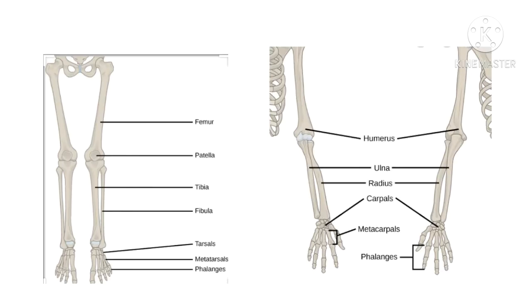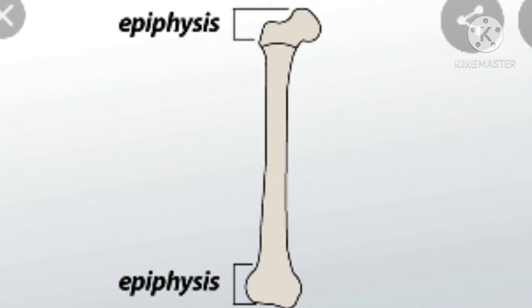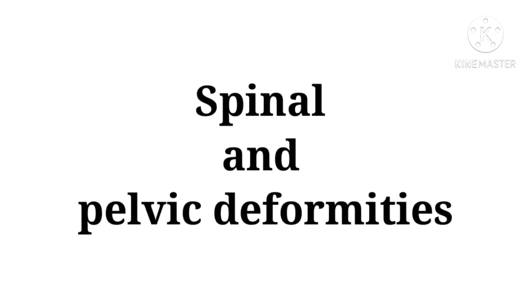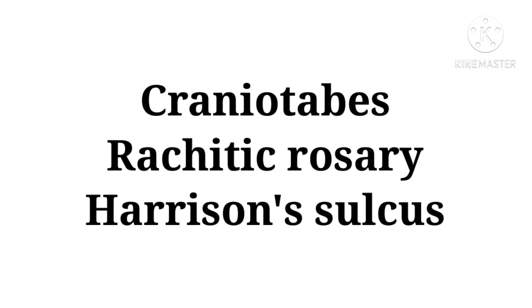In Ricketts, there is enlarged epiphysis in limb bones. Limb bones include our arms and legs, and the epiphysis refers to the ends of these bones. Ricketts also causes other deformities, including spinal and pelvic deformities. It also results in three associated conditions: craniotabes, ricketic rosary, and Harrison's sulcus. In the next video, we will discuss each of these one by one.